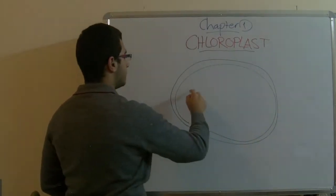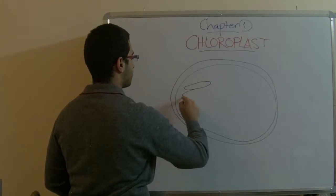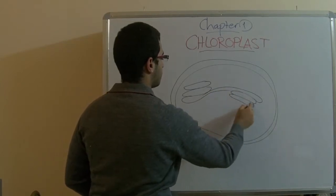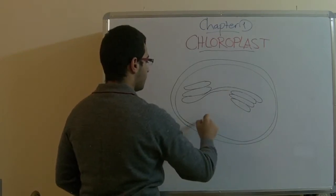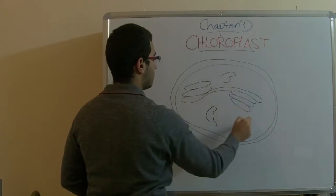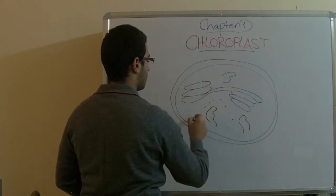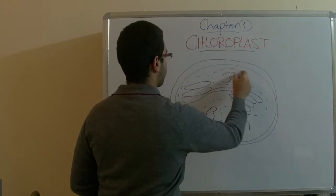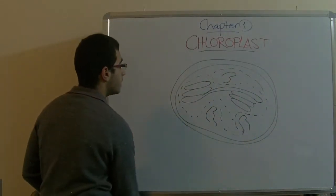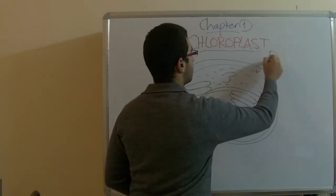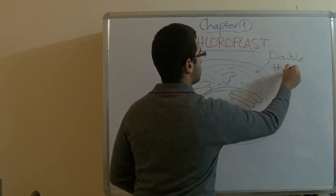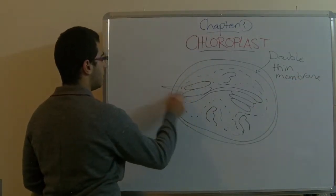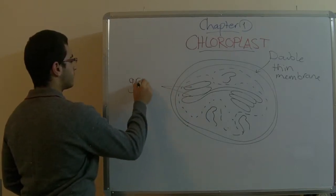Something like this, and here we have the starch grains. So this is the double thin membrane, and those are the grana discs.